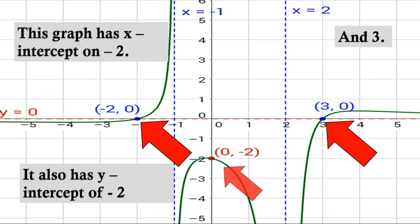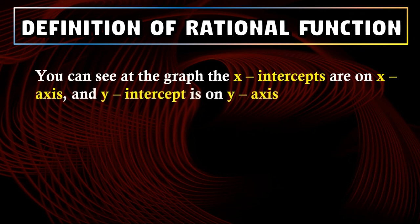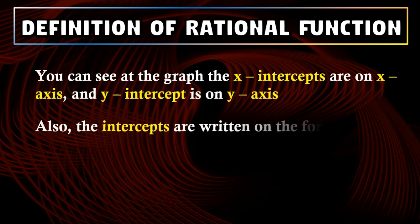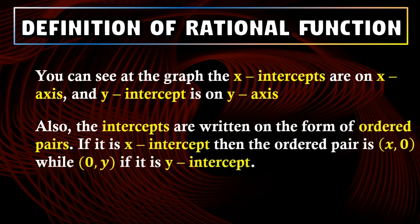Also, this graph has a y-intercept at negative 2, which is the red point here. In general, the intercepts must always be on the axis. The intercepts are written in the form of ordered pairs or points. If it is an x-intercept, it could be written as (x, 0), like (3, 0) on the example graph. And if it is a y-intercept, it could be written as (0, y), like (0, negative 2) on the example graph.